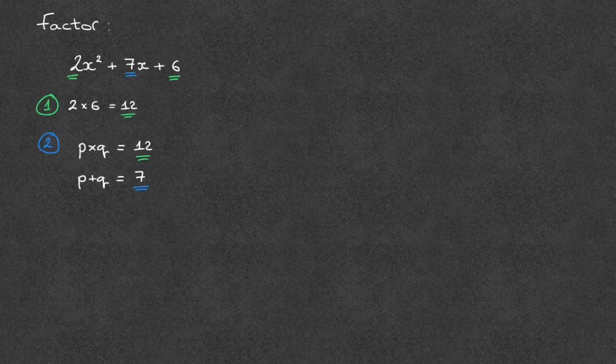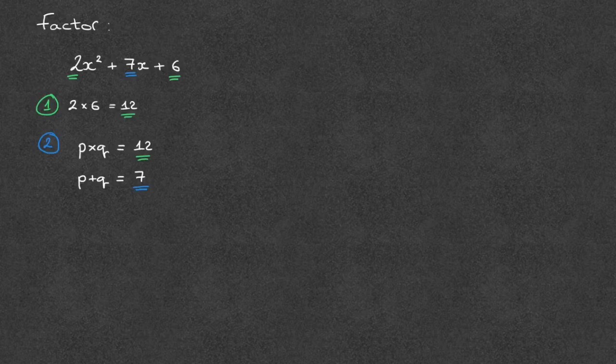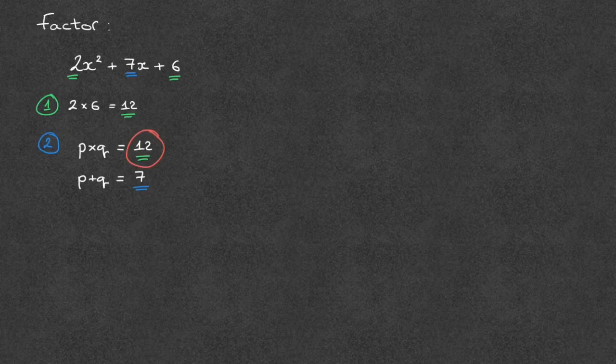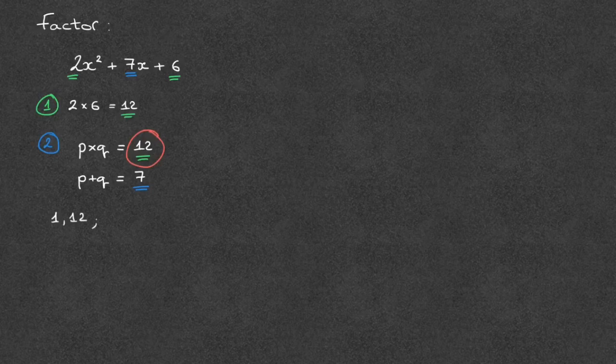To find these two numbers, p and q, I focus on the product, so the 12 that we have here. And I look for all of the pairs of whole numbers that I can find which multiplied together give us 12. The first that comes to mind would be 1 and 12, since indeed 1 times 12 is 12.